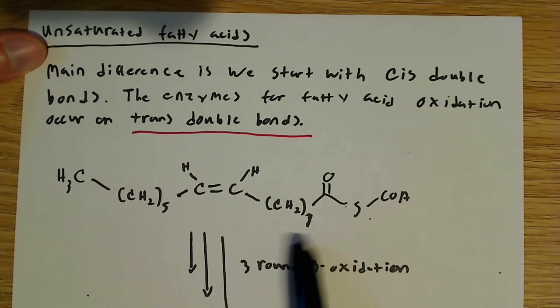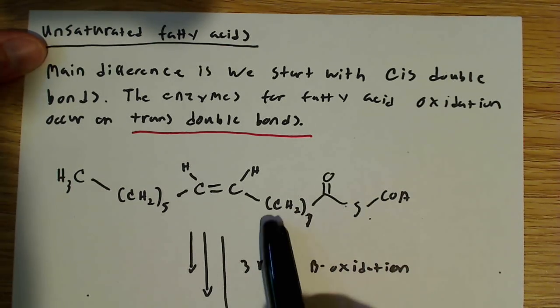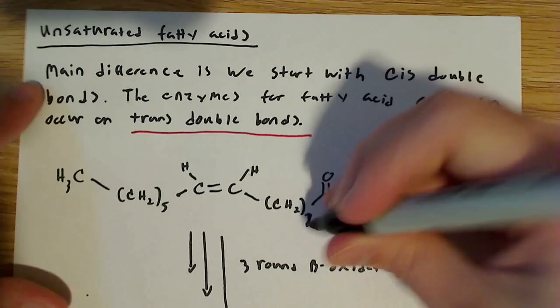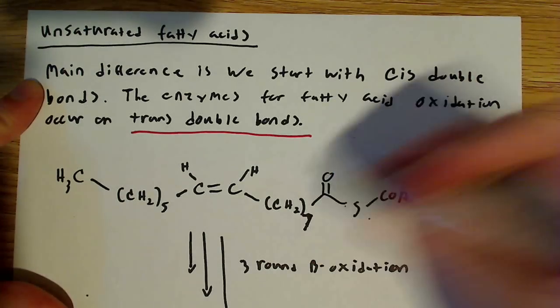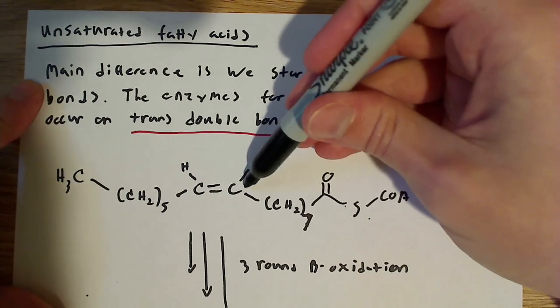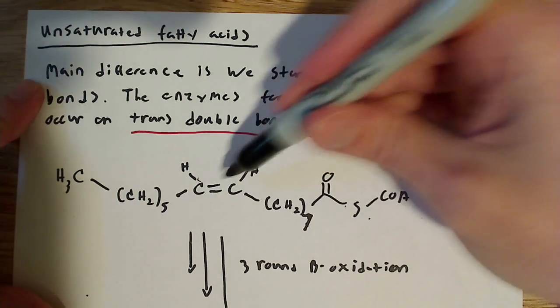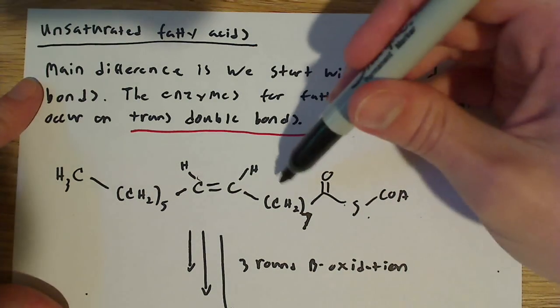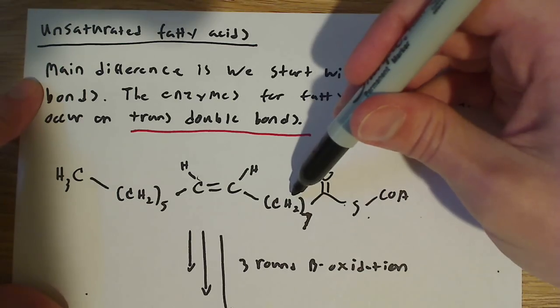Here we have this. Okay, we have seven carbons here, so, and that's interesting right here. So I'm saying that this is seven CH2 molecules before we get to this trans, rather, cis double bond here. So before we get to this cis double bond, we've got seven carbons here.